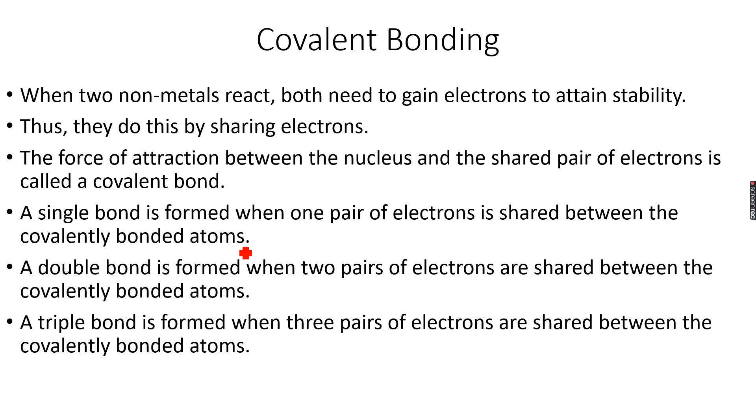When two non-metals react, both need to gain electrons to attain stability. When it was a metal and a non-metal, the metal wanted to lose electrons and the non-metal wanted to gain electrons, so both were happy.